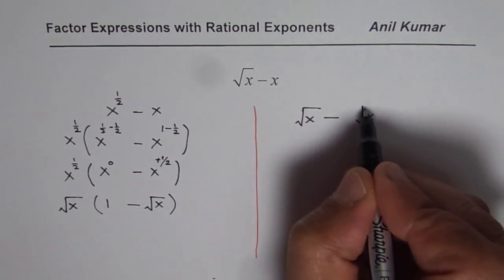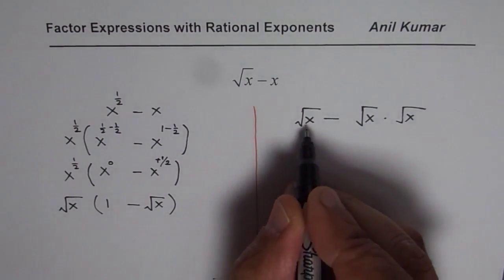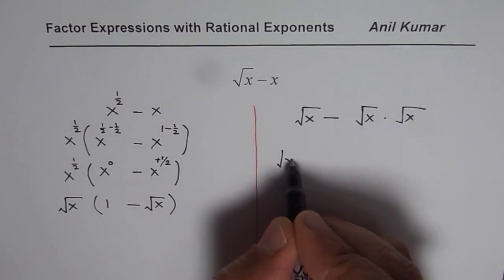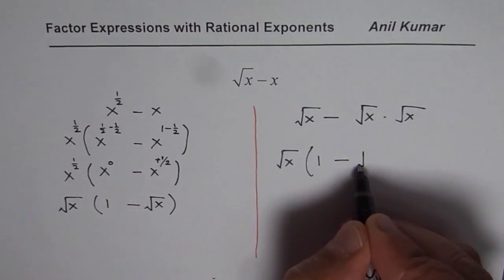So in that case, you can factor out one of these √x. So you get 1 - √x.